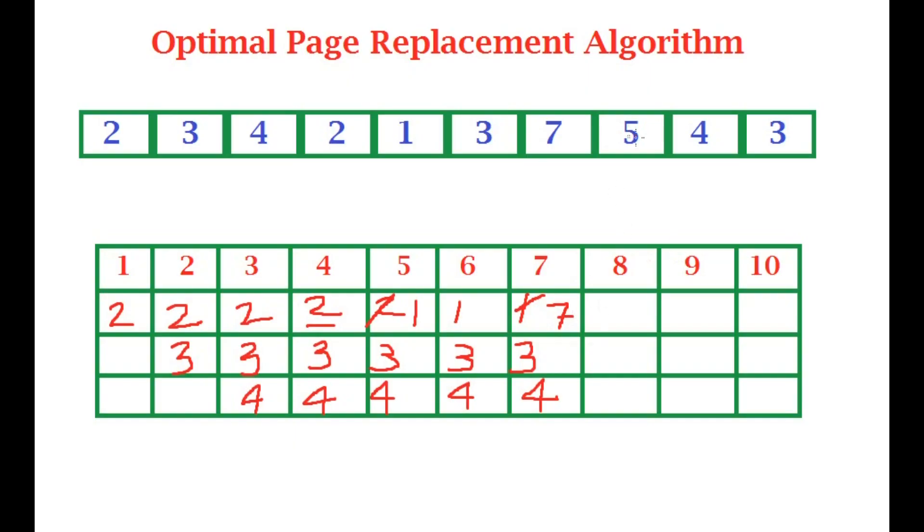In the eighth iteration, five wants to come in and we can see that seven is never going to be used again. So we just write seven here, three and four, and cancel out seven, write five here. In the next iteration, four wants to come in and it is already here, so it's a page hit. And in the next iteration, three wants to come in and it is again a page hit. So we'll just write five, three, and four.